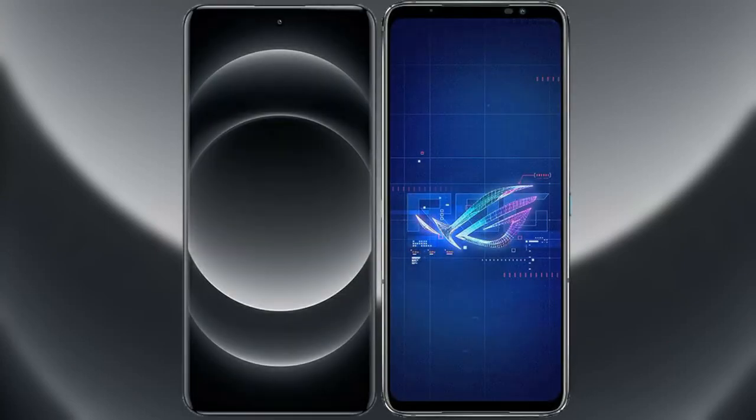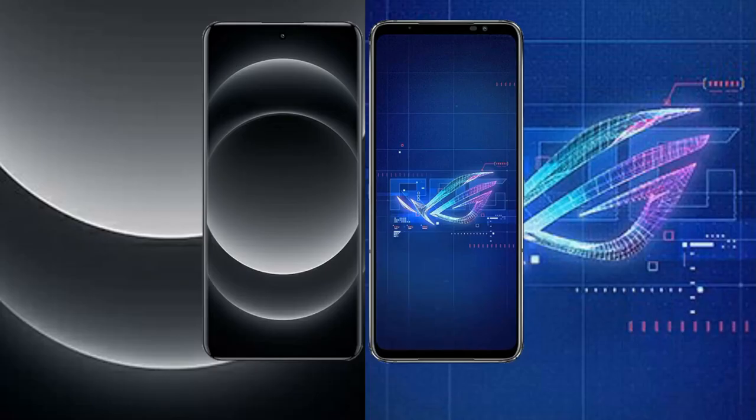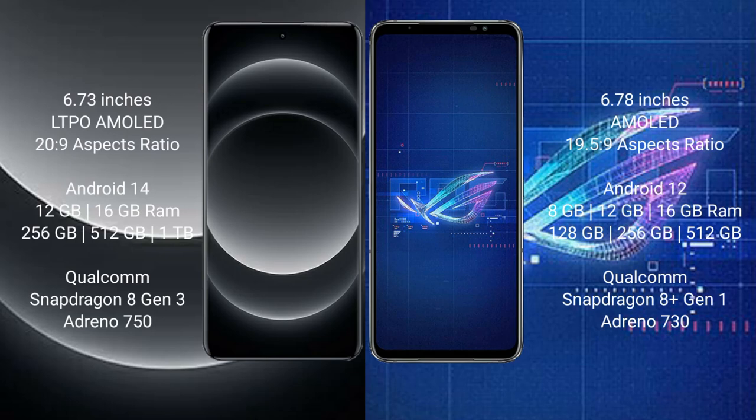I will compare the new Xiaomi 14 Ultra with Asus ROG Phone 6. Xiaomi 14 Ultra comes with a 6.73 inches LTPO AMOLED display and 6.0 PSO 20:9. Asus ROG Phone 6 comes with a 6.78 inches AMOLED display and 6.0 PSO 19.5:9.